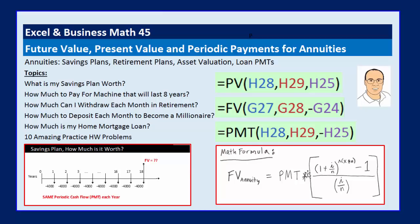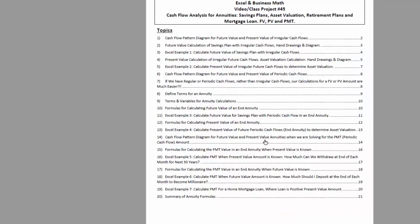This formula looks complicated, but the beauty of an annuity is we have one single formula that calculates future value, present value, and PMT. Before we look at our math formulas and functions for annuities, we actually want to look at one or two examples of cash flow financial calculations that are not annuities. We're going to start by looking at our PDF notes, which can be downloaded in the link below the video.